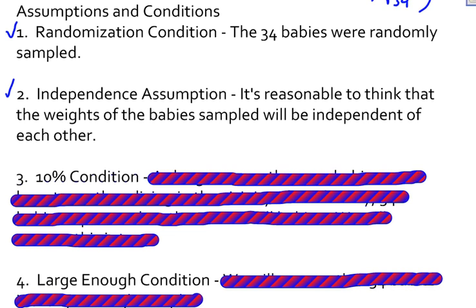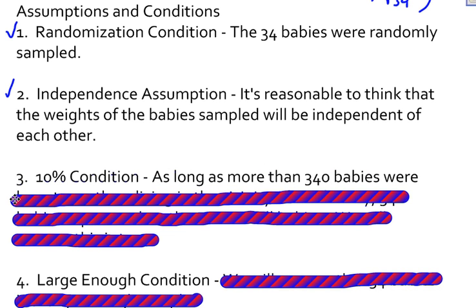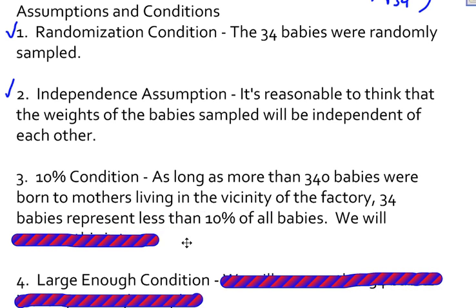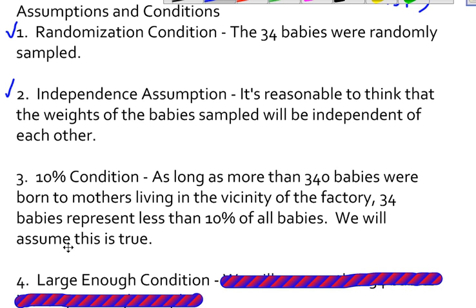I also need to check the 10% condition, which says that my sample size must be less than 10% of the population. As long as there are more than 340 babies born under these conditions, then 34 babies would represent less than 10% of all those babies. We are going to assume this is true, since we can't know for sure if this condition has been met.